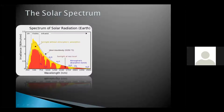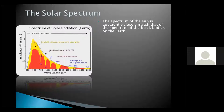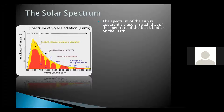The solid black line in the figure is the solar spectrum. The total energy the sun emits is represented by the area under the curve. Importantly, the spectrum of the sun is apparently closely matched to that of a black body on earth. An ideal black body is a surface that absorbs all radiant energy falling on it.